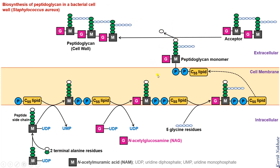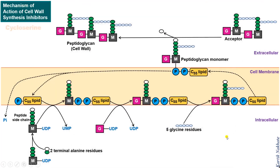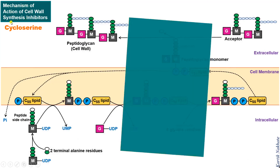After releasing the peptidoglycan building block, the C55 lipid carrier gets free and ready for initiating the next round. However, it still has two phosphate groups attached; therefore, the C55 lipid loses one phosphate group and becomes available for another cycle. This synthesis of peptidoglycan is a vulnerable process that can be blocked at several points by antibiotics. Now we will see the mechanism of action of various cell wall synthesis inhibitor antibiotics.